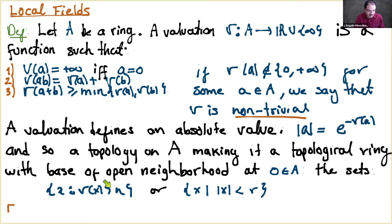Once we have this ring with valuation, we define the ring of integers of the field as the set of all elements x in K with v(x) ≥ 0. This is a ring — in fact a local ring with a unique maximal ideal — namely the elements with v(x) > 0. We also define the residue field as the ring of integers modulo the unique maximal ideal.